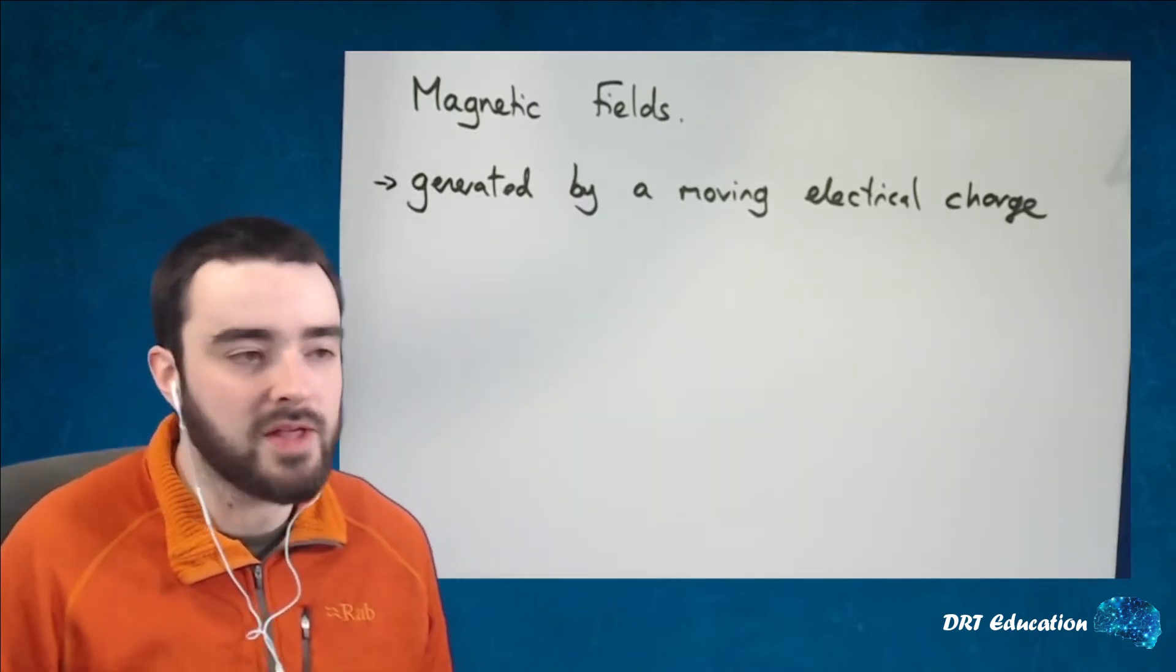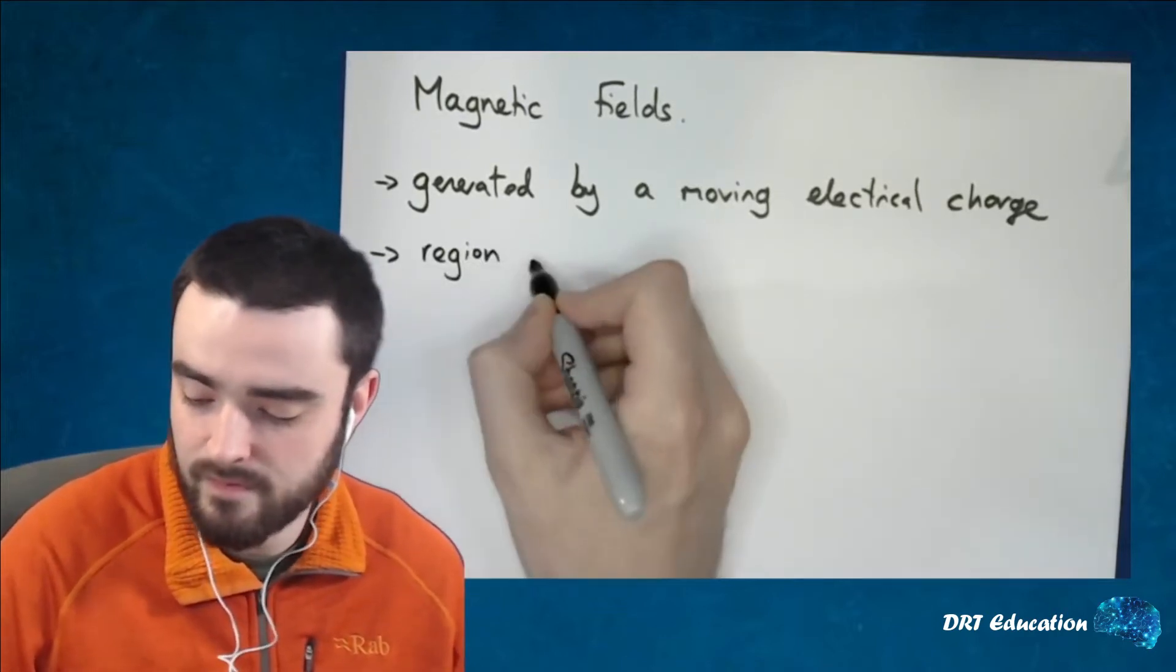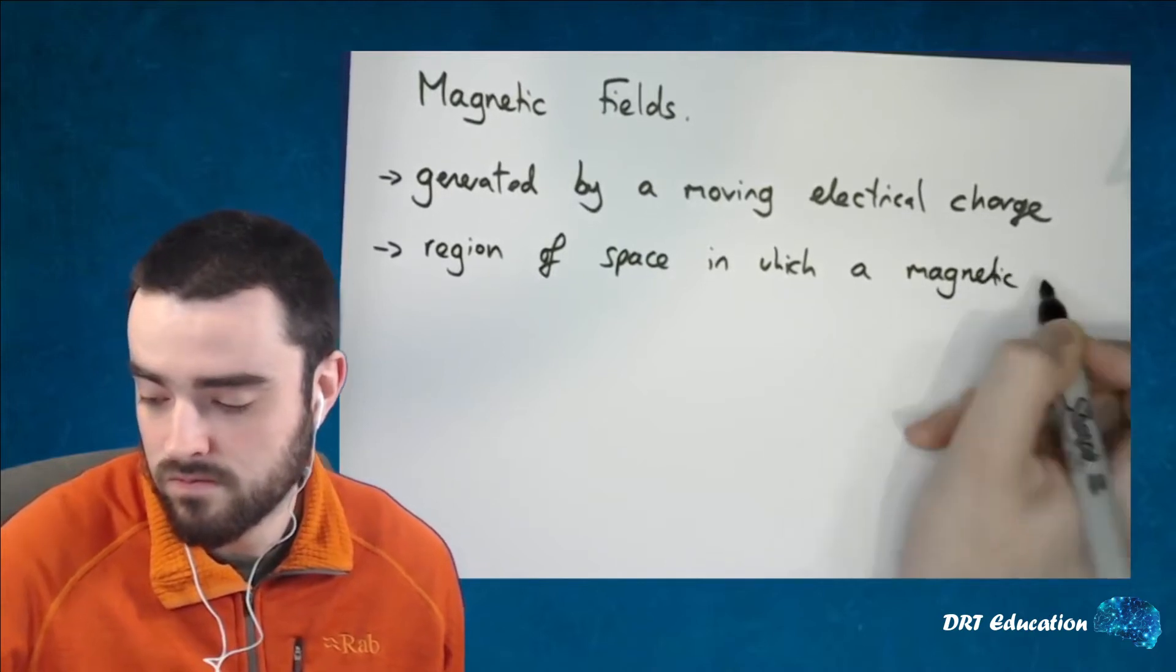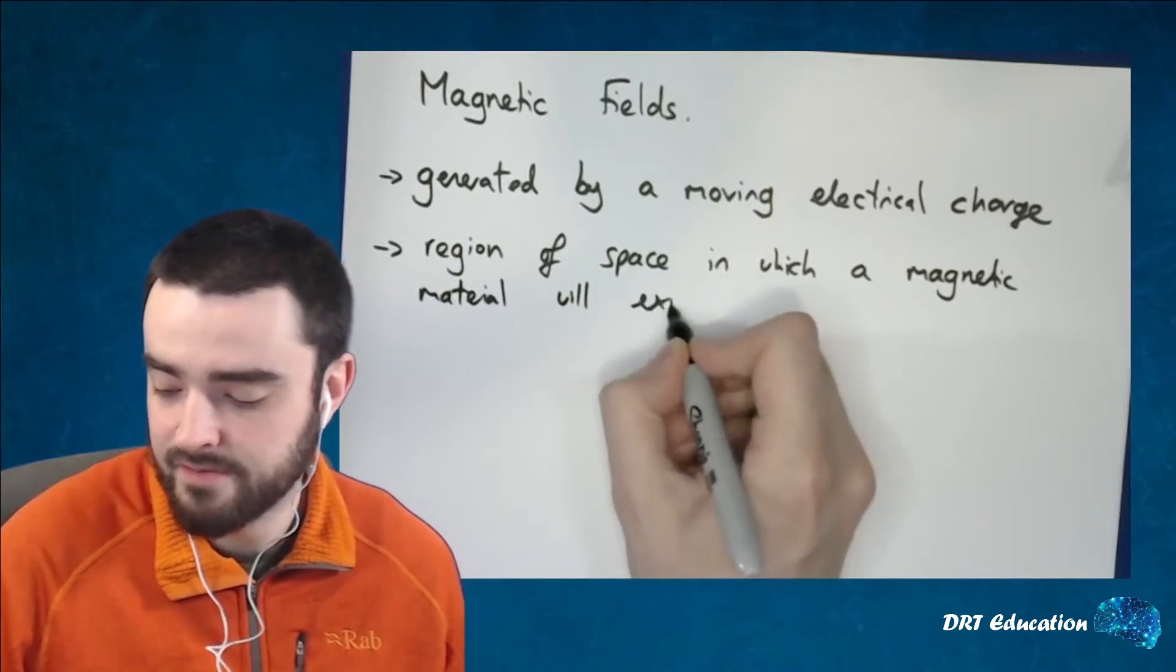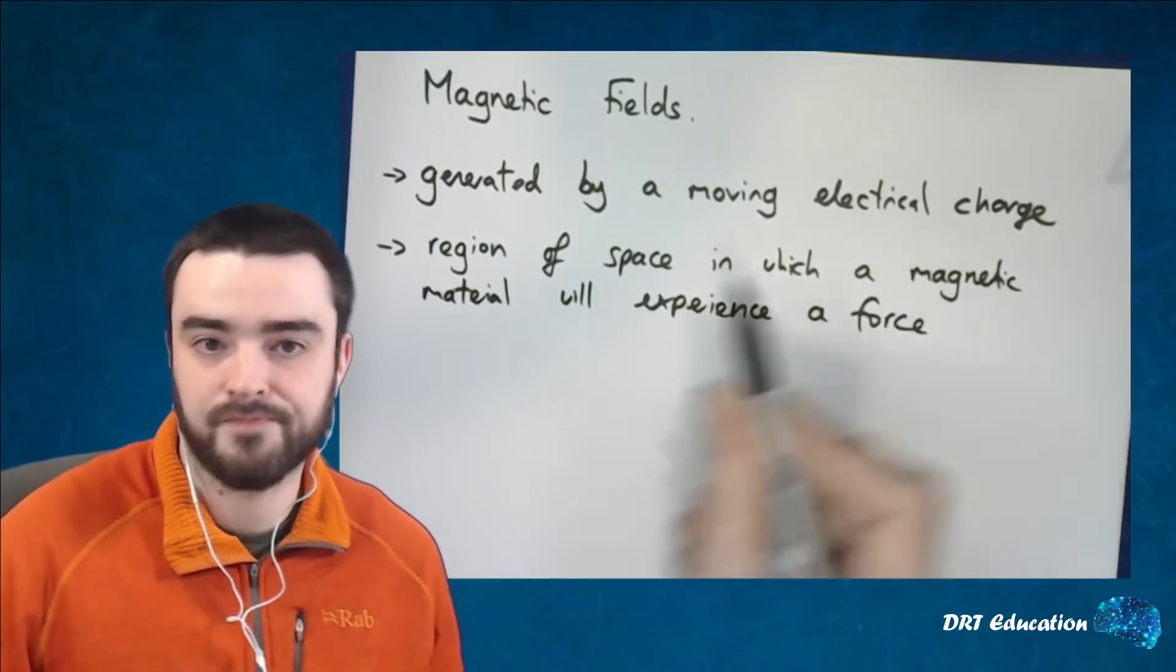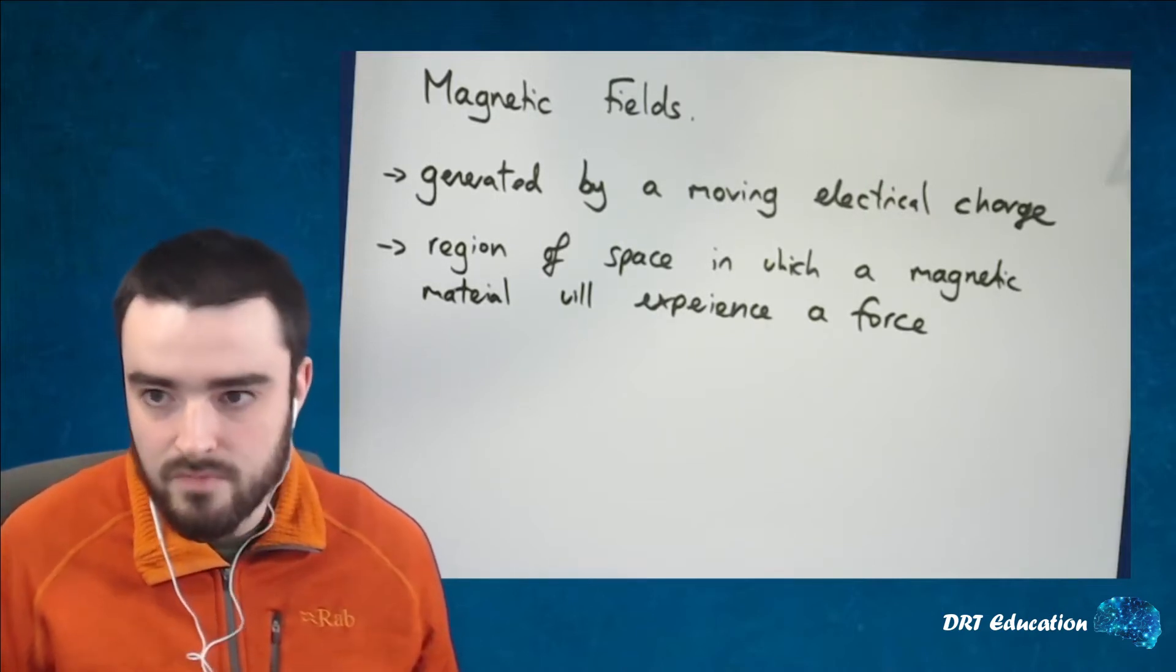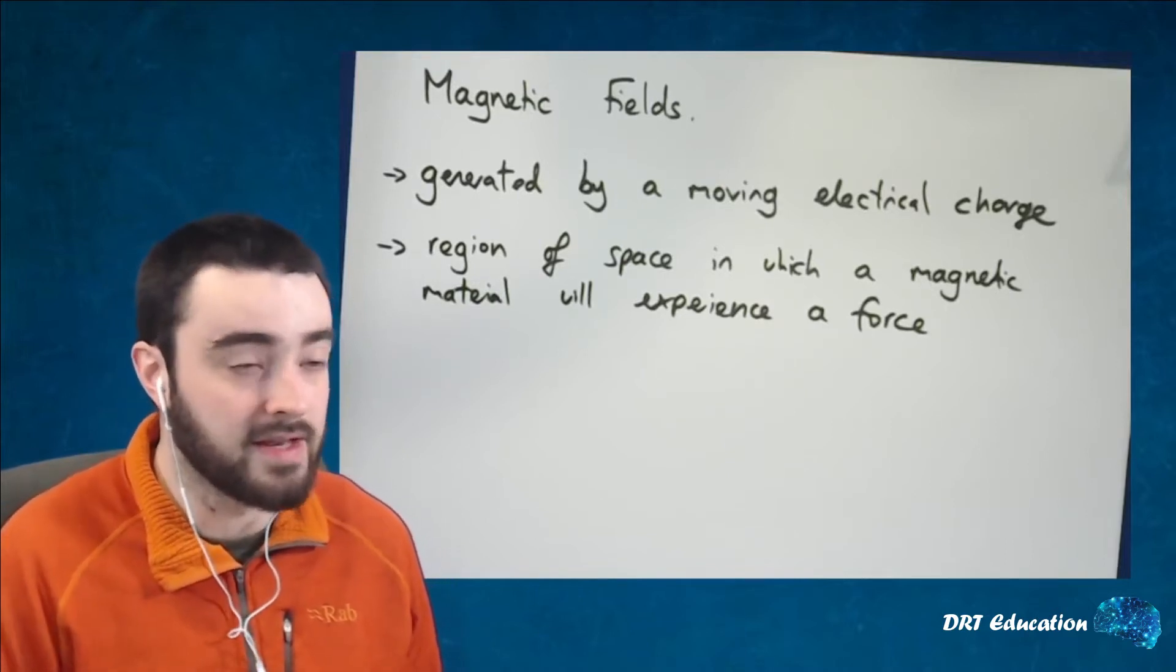So what is a magnetic field? Well, it's a region of space in which a magnetic material will experience a force. Because it's a field, it means it's a region of space that this is happening to, and it's going to be a magnetic material that will experience a force within that field.